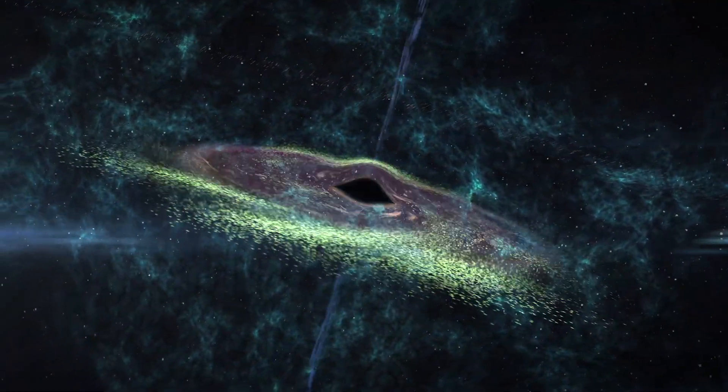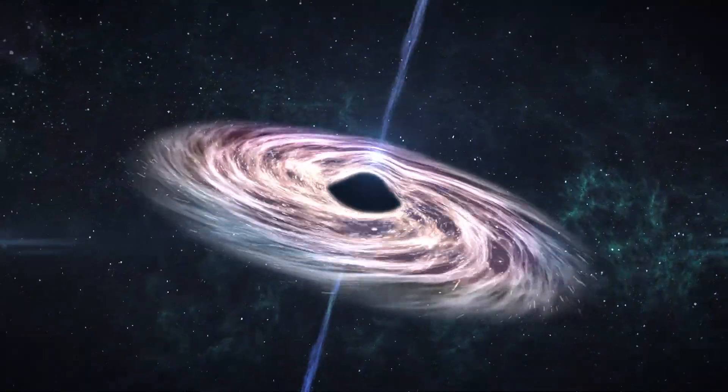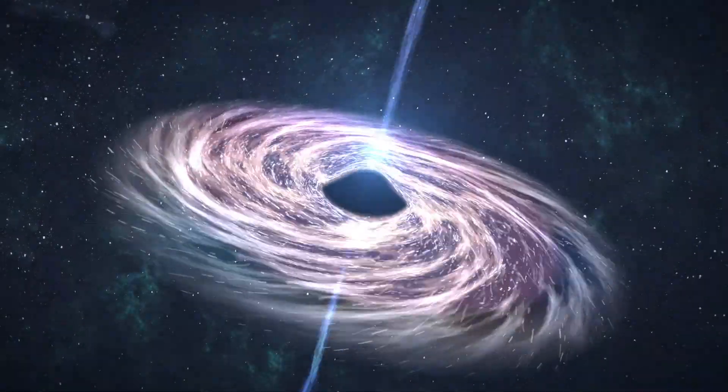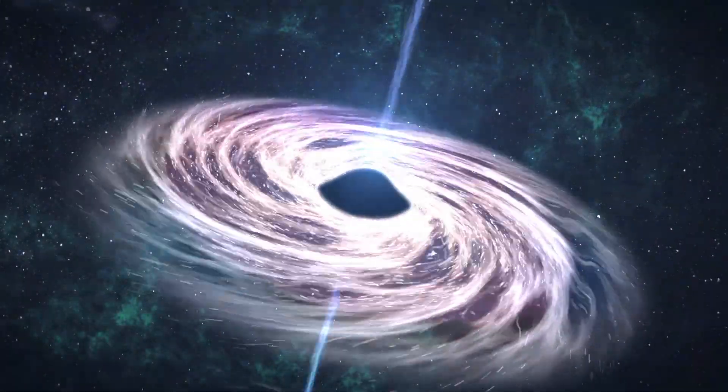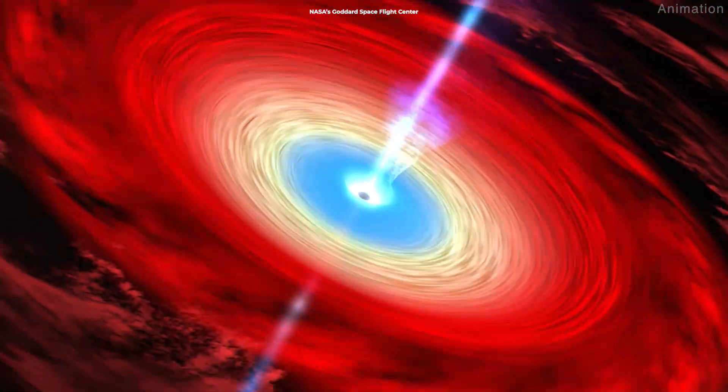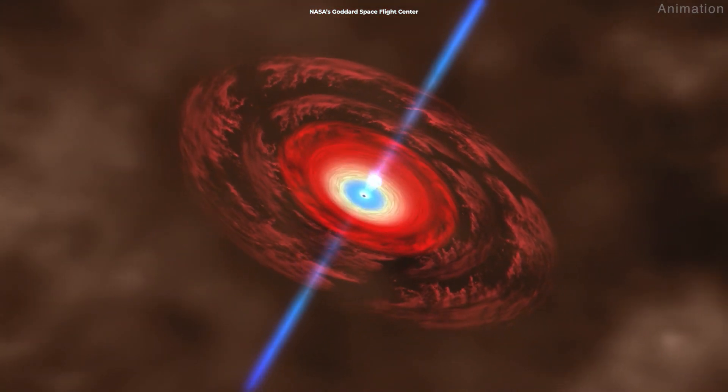No one really knows how jets form, so studying such objects will help us create better ideas. But the most popular explanation is that the fast-spinning accretion disk around the black hole, which is the matter falling into the black hole containing charged particles, will produce a powerful magnetic field in contact with the black hole.